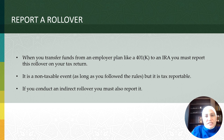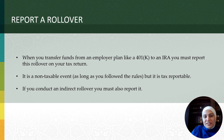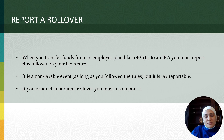Did you roll over retirement funds during the tax year from one account to another — for example, from a 401k to an IRA? When you conduct a rollover from an employer plan into an IRA, your custodian will generate a Form 1099-R for you. This event is tax reportable, but if you follow the rules, it's not taxable. Make sure it's treated as a rollover and not a taxable distribution by verifying that Form 1040, Line 4A or 5A shows the amount of the rollover, and Line 4B or 5B should be zero if no taxable distribution occurred.